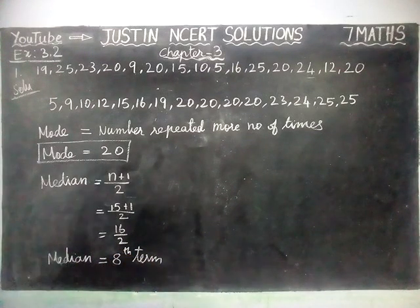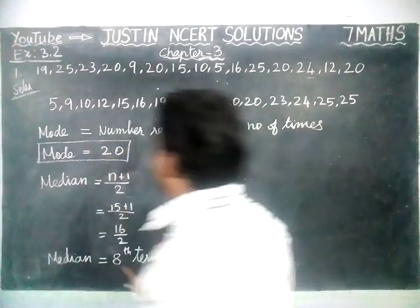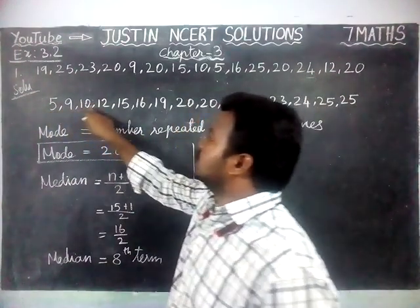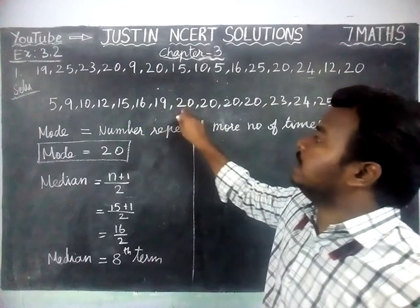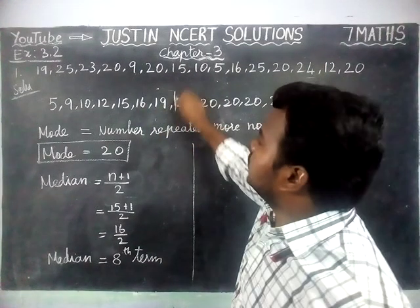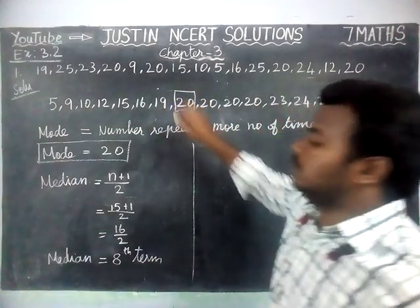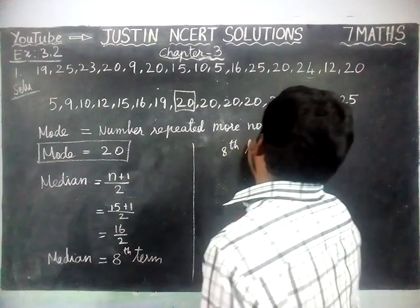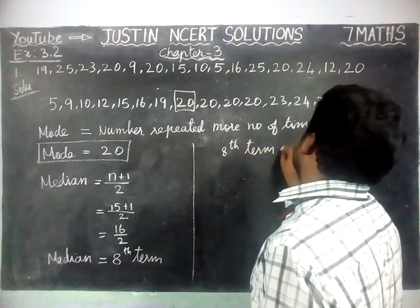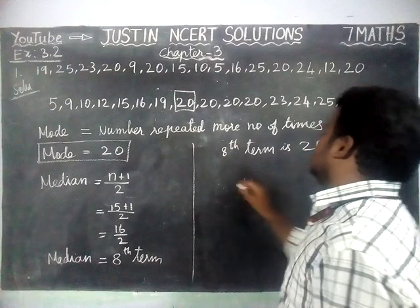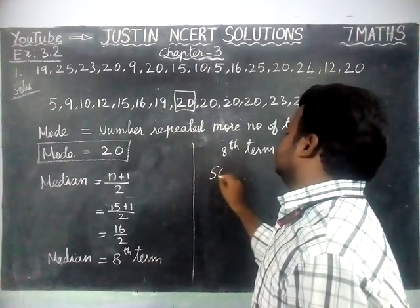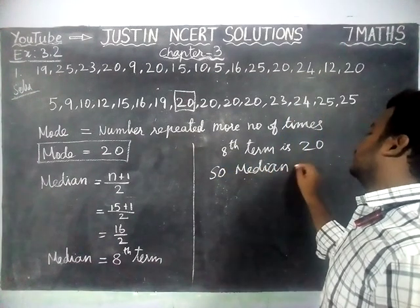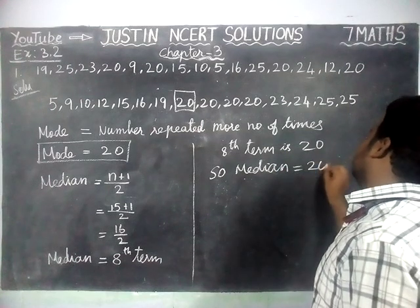Now we are going to find the 8th term of the given data arranged in ascending order. Counting: 1, 2, 3, 4, 5, 6, 7, 8 — the 8th term is 20. So median of the given data is equal to 20.